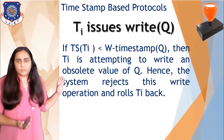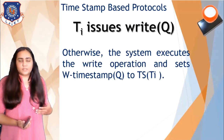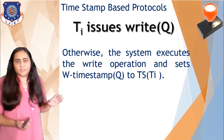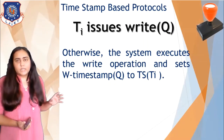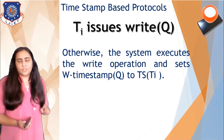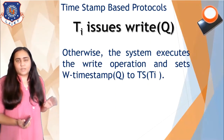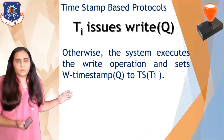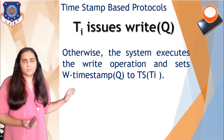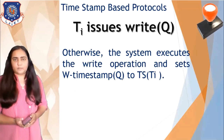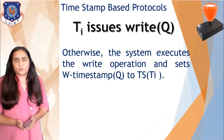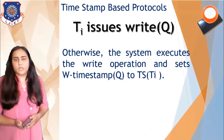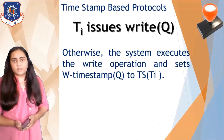The third case is the otherwise case — when neither of the first two conditions is true. This means Ti has a timestamp greater than or equal to both the R-timestamp and the W-timestamp of Q. In this case, the system executes the write operation and sets the W-timestamp of Q to the timestamp of Ti. That is how the timestamp-based protocol works. If you find it a little difficult at first, just go through it once more and you'll get it.